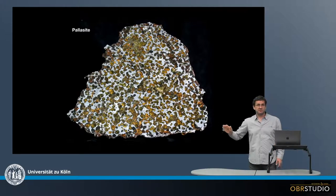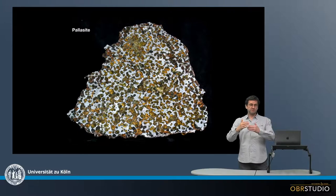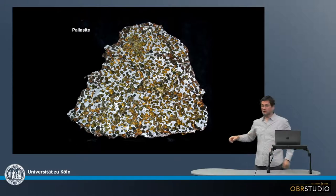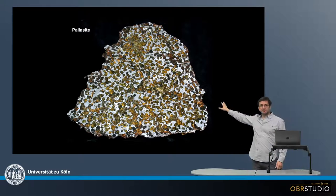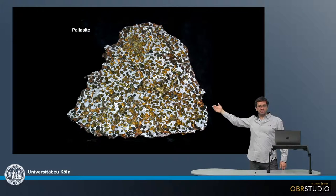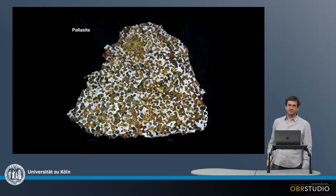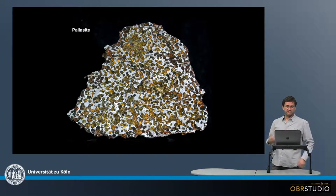This is a pallasite. This also comes from a differentiated parent body, likely from the border between core and mantle where the silicate and metal mix. So all the green bits here are silicate, typically olivine. And what is more reflecting is the metal. So this is a mixture of the silicate — the olivine — and the metal from the core of an asteroid.